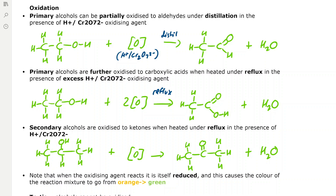Primary alcohols can also be further oxidized to carboxylic acids when heated strongly under reflux in the presence of excess acidified potassium dichromate oxidizing agent. In the equation we have two [O] oxidizing agents and we're refluxing to form the carboxylic acid — ethanoic acid — and water as well. We still only form one water molecule.